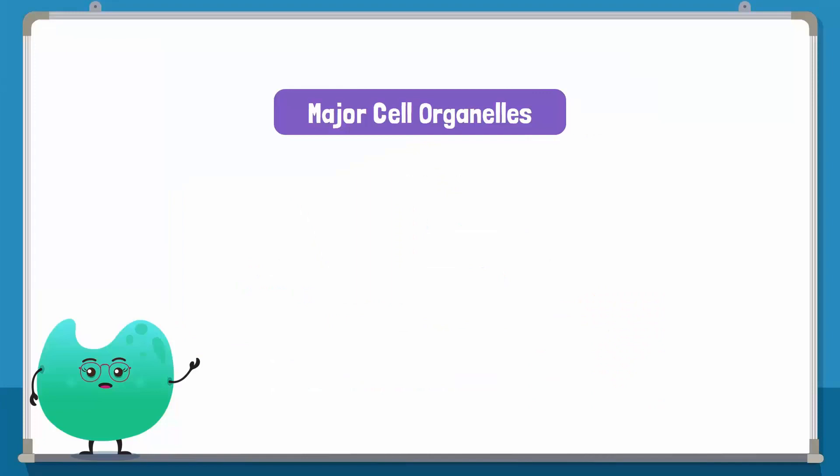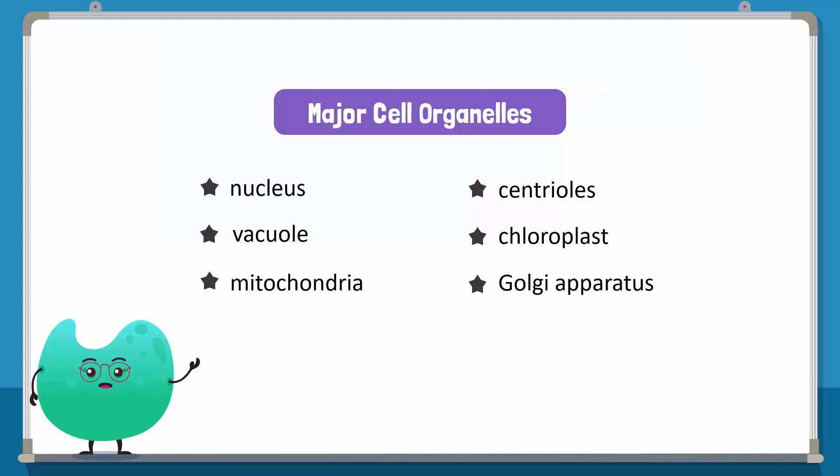The major organelles of a cell are the nucleus, vacuole, mitochondria, centrioles, chloroplasts and Golgi apparatus. Let us look at them one by one.